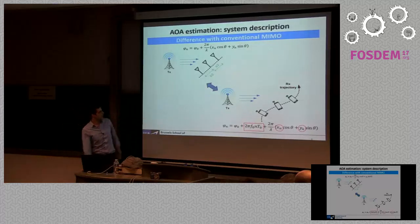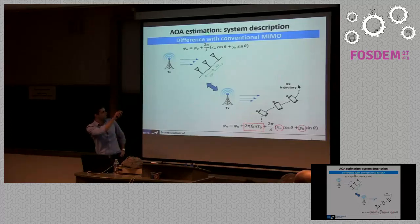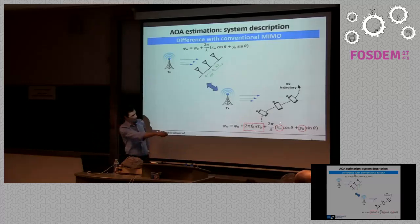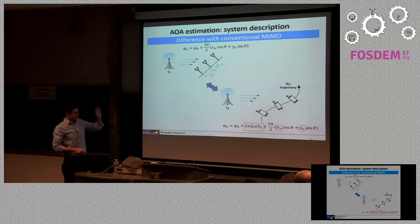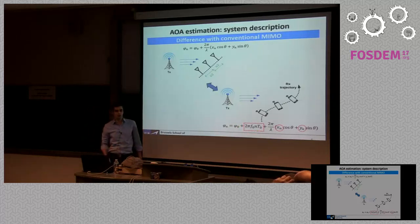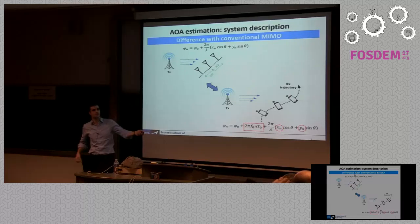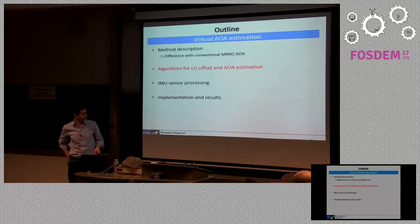The difference between conventional MIMO and this virtual MIMO are two terms in the signal model. The first is a frequency offset term, which you don't have in conventional MIMO. The second is that you don't know the XN and YN coordinates of your different virtual antennas. The first part addresses how to deal with the frequency offset term, which is fairly straightforward, and the second part covers how to estimate those XN and YN positions using inertial measurement units.